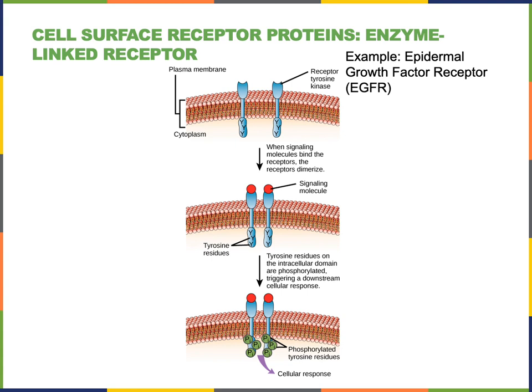In the case of the epidermal growth factor receptor, scaffolding proteins bind to the phosphorylated EGFR and then stimulate a Ras G protein. The Ras G protein will then activate the extracellular signal-regulated kinase phosphorylation cascade — the ERK phosphorylation cascade — eventually leading to mitotic cell division to stimulate tissue growth.